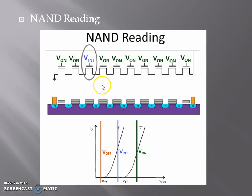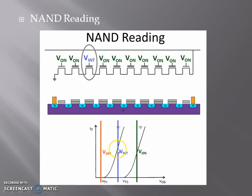Similarly, in NAND reading, if we are interested in reading a specific transistor, we give an intermediate voltage to the gate of that transistor. As these transistors are connected in series, if we want current through this transistor, all the other transistors should be conducting. Hence, we give a high voltage to the gate of all the other transistors and we get a current. Depending upon the value of that current at this intermediate voltage, we determine whether the read value is 1 or 0.